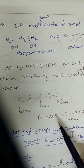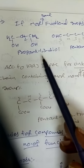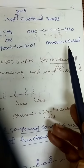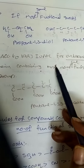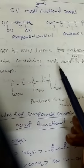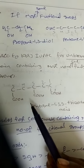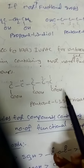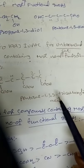If more than one of the same functional group is present, we use multiplying prefixes: di-, tri-, tetra-, penta-, etc. For example, propane-1,3-diol has two -OH groups, and pentane-1,5-diol has -OH at both ends. According to 1993 IUPAC rules, for an unbranched system containing more than one of the same functional group — such as all carboxylic acids — we use the appropriate multiplying prefix, giving names like tricarboxylic acid.